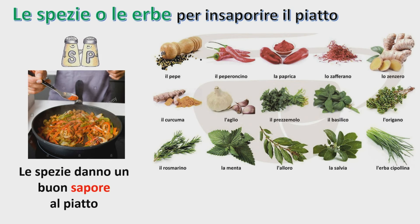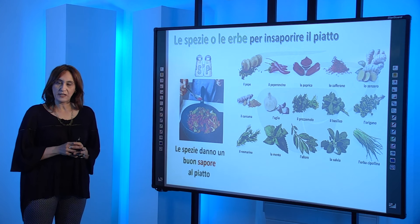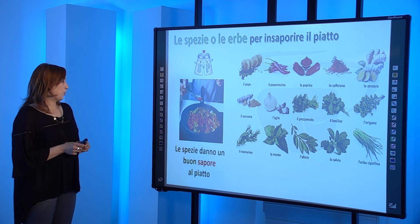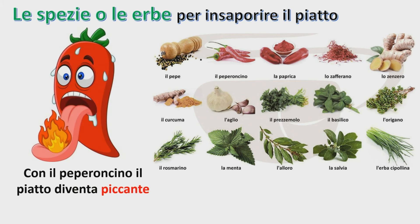Queste sono le spezie o anche le erbe. Con le spezie possiamo preparare un piatto buonissimo, un piatto saporito. Quindi usiamo queste spezie per insaporire il piatto. Le spezie danno un buon sapore al piatto. Per esempio, se vogliamo preparare un piatto di spaghetti con la salsa di pomodoro, possiamo usare l'aglio, il basilico, oppure l'alloro. Se usiamo il peperoncino, il piatto diventa piccante, quindi un piatto speziato.